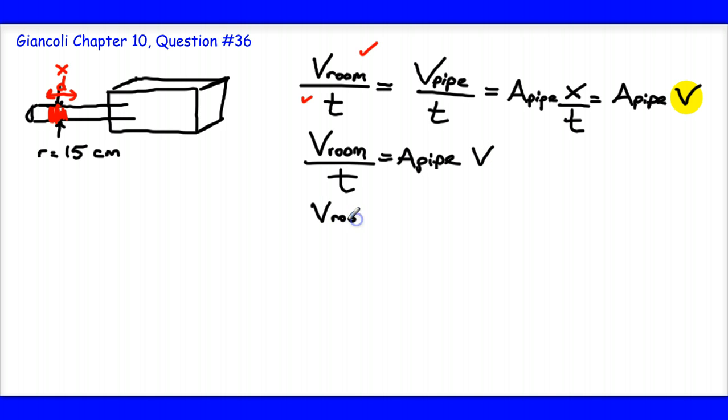We can see that I need to divide both sides by the area of the pipe. And I get the volume of the room divided by pi r squared, the area of the pipe, times the time. And that's going to give me the velocity V of the fluid through the pipe.